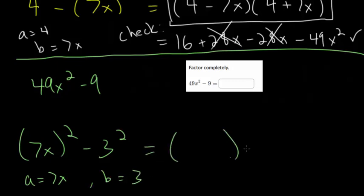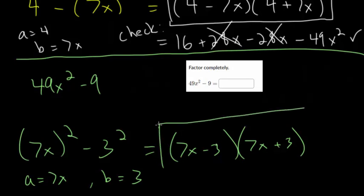So we factor this into its two binomials multiplied together. First one minus second one. So 7x minus 3. And the first one plus the second one. Now, you can multiply these out to check, but you will see that they do simplify to this 49x squared minus 9. So you can feel confident that this is, in fact, the right answer.